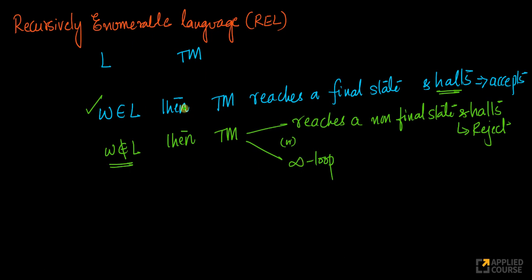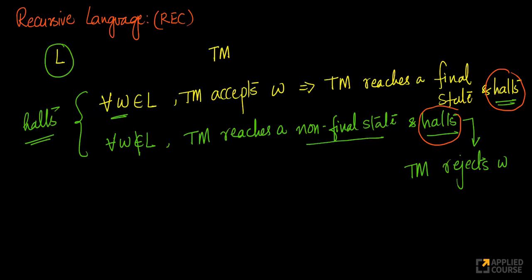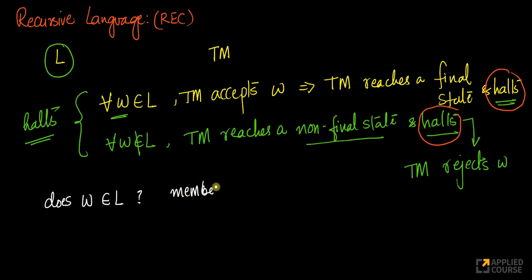If you have a question like 'does W belong to this language?' — this is called the membership question or membership property. For a recursive language, I can definitely answer this because the machine always halts. For a recursively enumerable language, if the word does not belong, I cannot say — it may halt or go into an infinite loop.